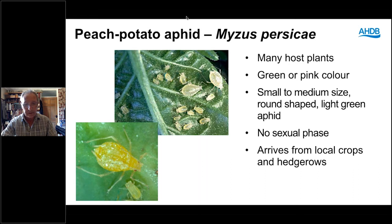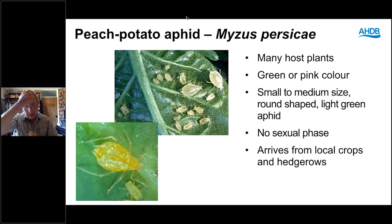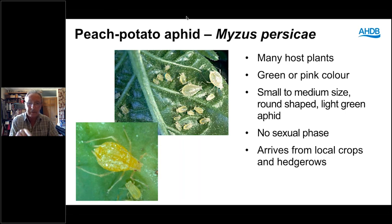Looking at some aphid species: the peach potato aphid, Myzus persicae, is about one and a half to two millimetres in length with a more oval-shaped body. This comes in all year round. It has no sexual phase — they are all females giving birth to live young — so it's quite a rapid breeding aphid.